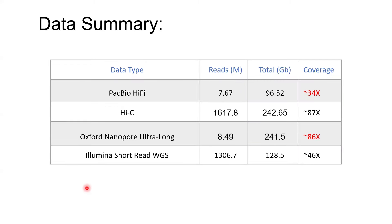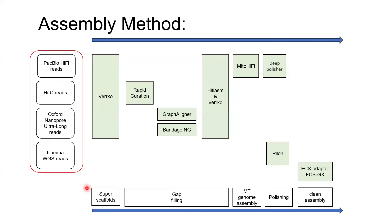Here is the summary of our data. We got 34x PacBio Hi-Fi data, 87x Hi-C data, 86x of Oxford Nanopore ultra-long reads — of which 32x is over 100 kb — and 46x coverage of colorimetric Illumina whole-genome sequencing data. The tools we used include Verkko to generate the initial assemblies, and Bandage NG for visualization.